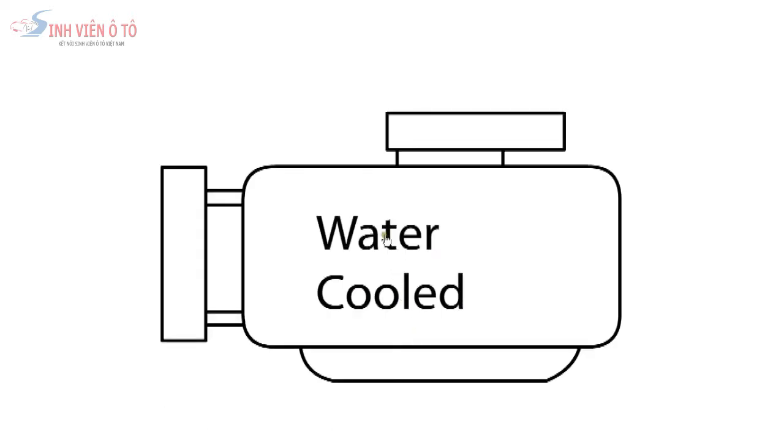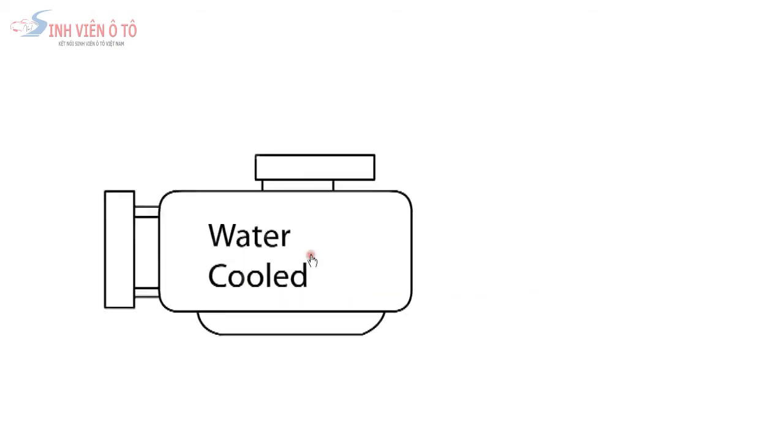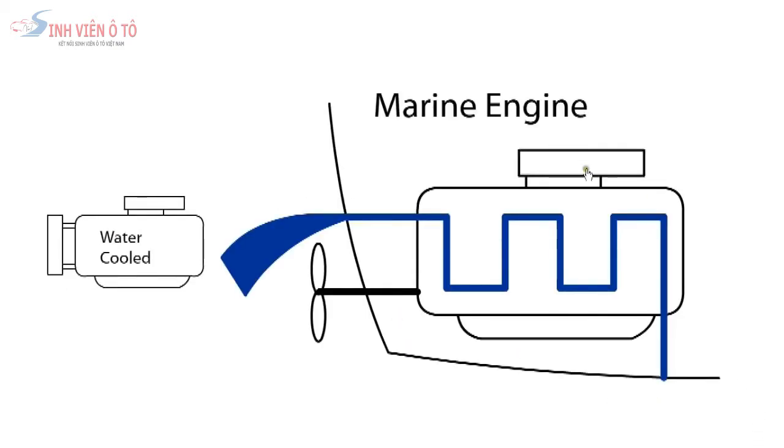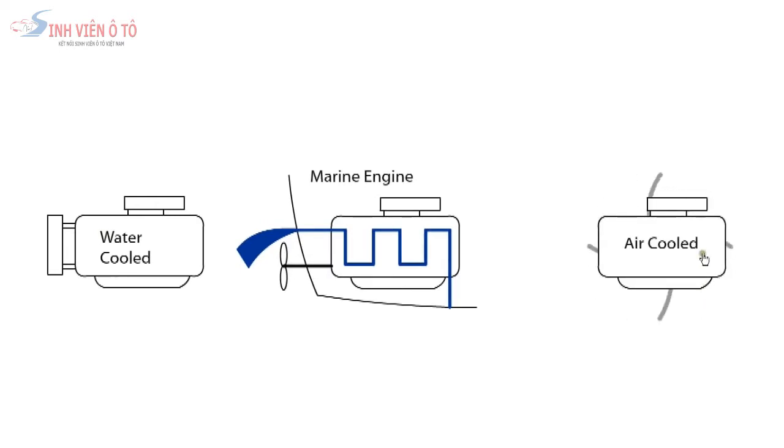Water-cooled engines use a liquid to remove heat fast enough to keep temperatures low so the engine can survive. Marine engines use the volume of water to directly cool the engine while air-cooled engines use a large volume of air and a fan to maintain engine temperature.